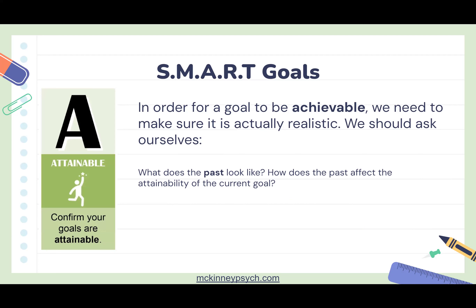Ultimately, if a goal is unattainable you're more likely to give up on it, or potentially even less likely to pursue goals in the future using this method. By genuinely looking at how we did things in the past, we're going to set our future selves up for success by setting goals that are actually attainable.